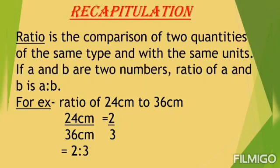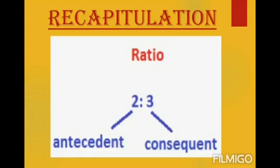Let's start with a quick revision. Ratio is the comparison of two quantities of the same type and with the same units. If A and B are two numbers, ratio of A to B is written as A:B. For example, to find the ratio of 24 cm to 36 cm, we write it in fraction form — the units are the same, so when we simplify we get 2/3, and the ratio is 2:3. In 2:3, the 2 is called the antecedent and 3 is called the consequent.